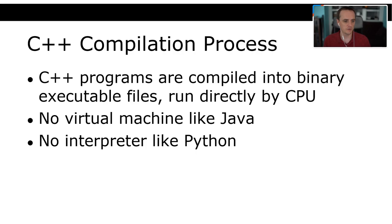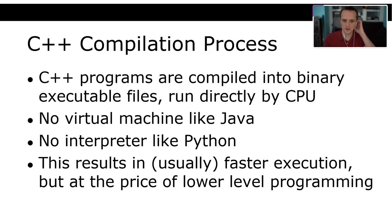There's no virtual machine in C++ like Java. If you take a program compiled on one operating system or processor, it may not work on another, because it's the actual code that machine runs. There's no interpreter like in Python or JavaScript — in those languages you don't have to compile your code. This results in usually faster execution, but at the price of lower-level programming.